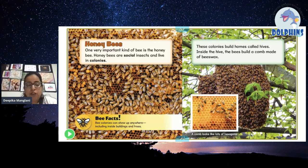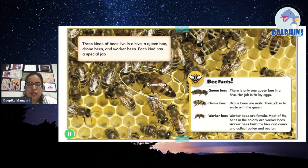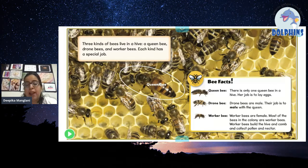Three kinds of bees live in a hive: a queen bee, drone bees, and worker bees. Each kind has a special job. In the madhumakhi ke chate — the beehive — you will see three kinds of bees: the queen bee, who is the leader; the drone bee; and the worker bee. All of them have a different kind of work.